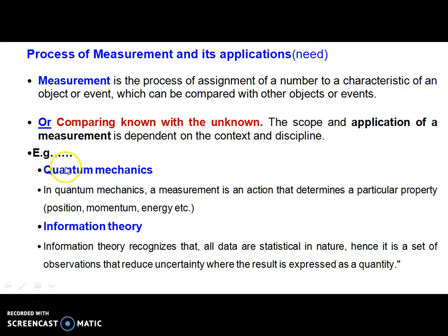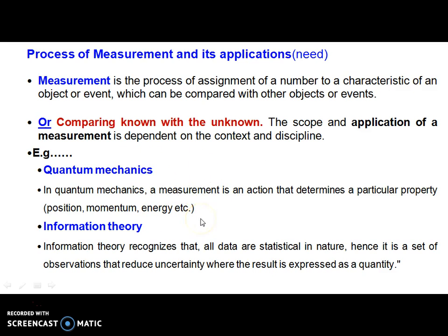Let us take an example. In case of quantum physics, a measurement is an action that determines a particular property — for example, measurement of a position, measurement of a momentum, measurement of an energy, etc. In case of information theory, this is the data which is actually statistical in nature — a set of observations that reduces uncertainty where the results can be expressed as a quantity.